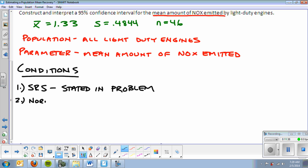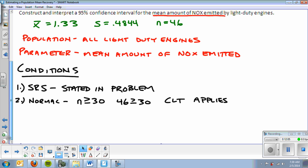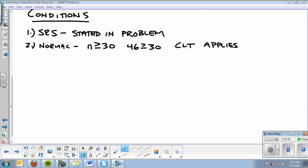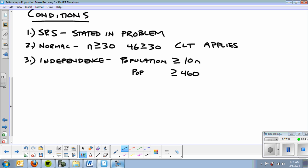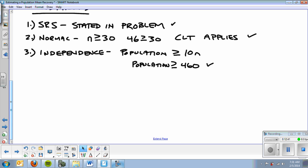Now, everyone's least favorite part, the conditions, which you must check every single time. I want to see them listed. I want you to write SRS and then talk about whether it's met or not. We scan up to the following sample. Random sample. So this is stated in the problem. Two, normal. Central limit theorem to the rescue. N greater than or equal to 30. There are 46 in my sample. So I'm not concerned with the population size. Central limit theorem says that the sampling distribution will be approximately normal. So CLT applies. That makes life very easy. We will get into examples where the central limit theorem does not apply. And the last condition is independence. That's the population greater than or equal to 10N. I multiply the sample by 10, I get 460. And I'm going to assume that there's more than 460 light-duty engines in the population.